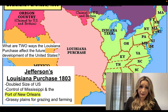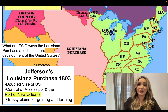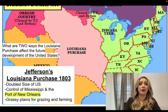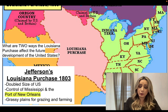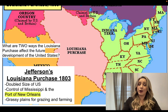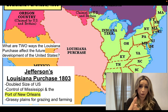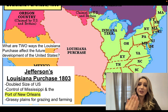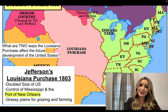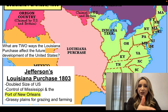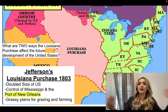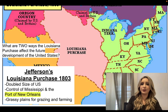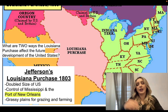What I want you to do next is write a short constructed response answering this question: what are two ways that the Louisiana Purchase affected the future development of the United States? When answering short constructed responses, make sure you check how many answers are being asked for. The best way to answer is by restating the question. Start by typing: 'One way that the Louisiana Purchase affected the future development of the United States is that...' and give your answer. Then: 'A second way is that...' and give your second answer.